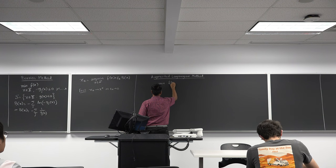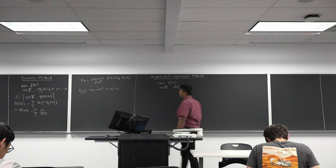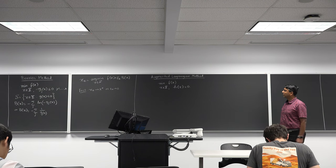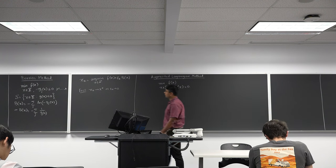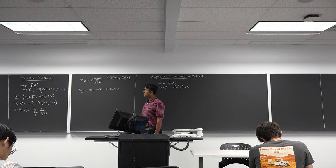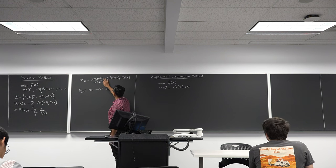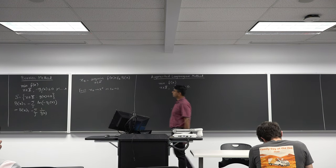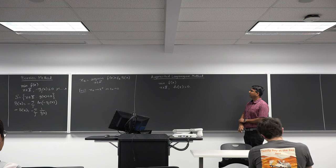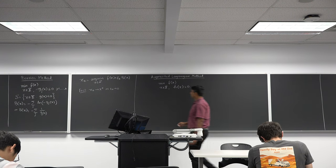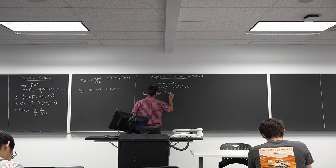I want to contrast this algorithm with the augmented Lagrangian method, and the setting is slightly different. So I want to minimize f of x, where x is in X and h of x equals 0. Now I am no longer looking at an inequality constraint; I am looking at an equality constraint. And I want to do something very similar: I want to create a function so that I can solve a problem of this type and get a sequence that converges to the optimal solution as some parameter escapes to infinity or to 0. So we construct what is known as the augmented Lagrangian.